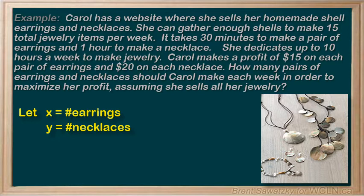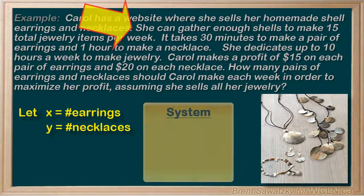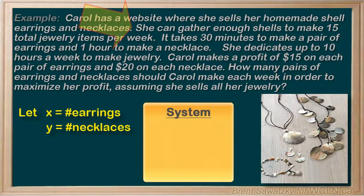Back to our question: we're told that she can gather enough shells to make 15 items per week. A simple inequality to represent that limitation would be x, the number of earrings, plus y, the number of necklaces — adding those together for a total that has to be equal to or less than 15. So there's our first inequality.